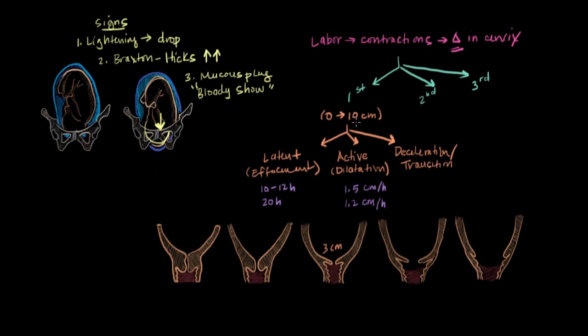Now we have a fully effaced, fully thinned out and fully dilated cervix. The second stage of labor marks the period between when you have a fully dilated cervix to the delivery of the baby. For a lot of people, this is what's known as the pushing stage. Usually, this should take less than an hour in a woman who's done it before and less than two hours in a first-time mom. But keep in mind that the use of something like an epidural can prolong this stage.